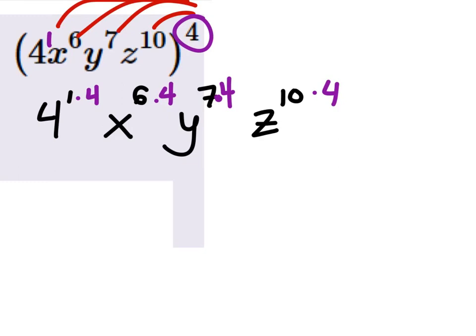For example, like the x powers, you would have four groups of six, which would give us x to the power of 24.